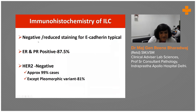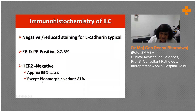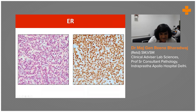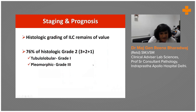On immunohistochemistry, e-cadherin is lost. Regarding steroid hormone receptors, ILC usually shows ER/PR positivity in approximately 87% of cases. HER2 is negative in almost 100% of cases, except in the pleomorphic variant where it can be positive. ER/PR positivity is also high in the pleomorphic variant.